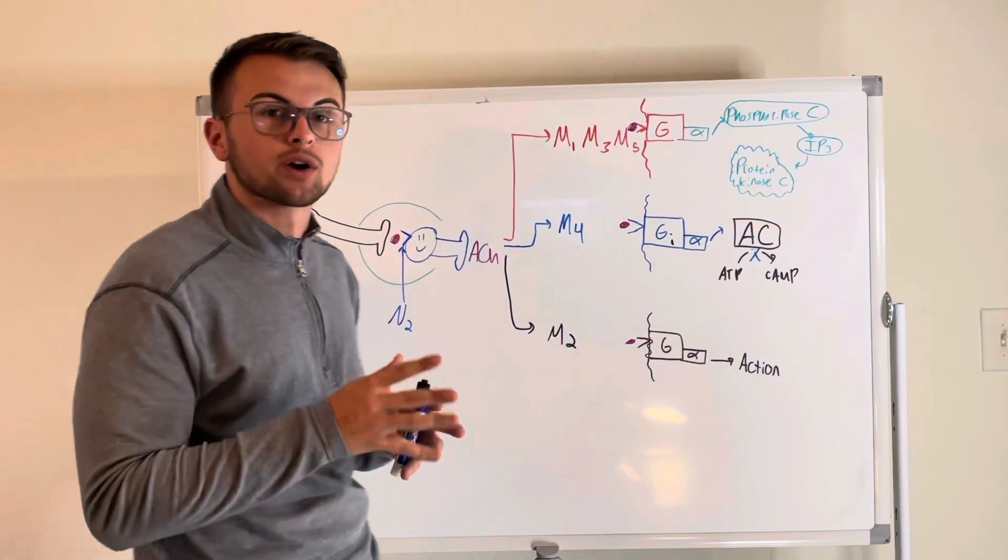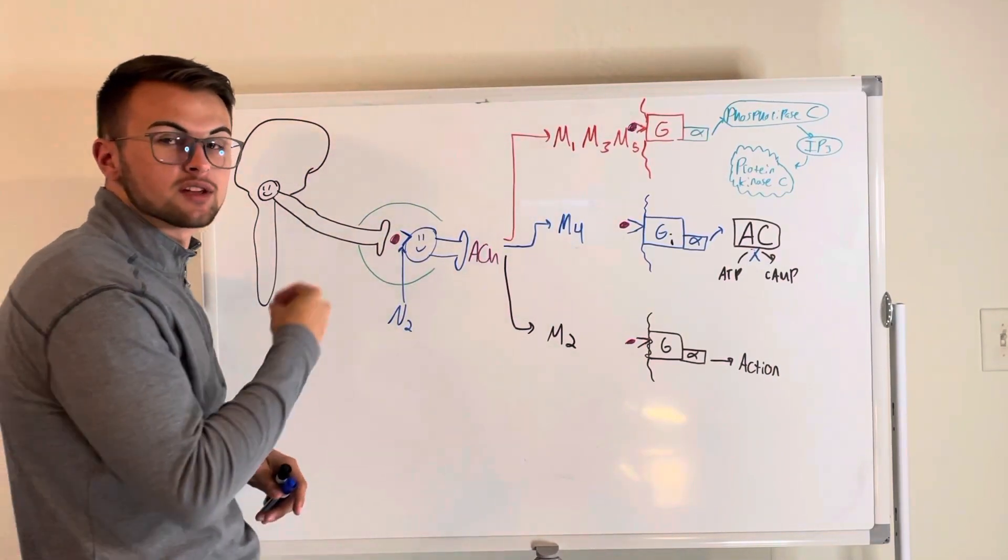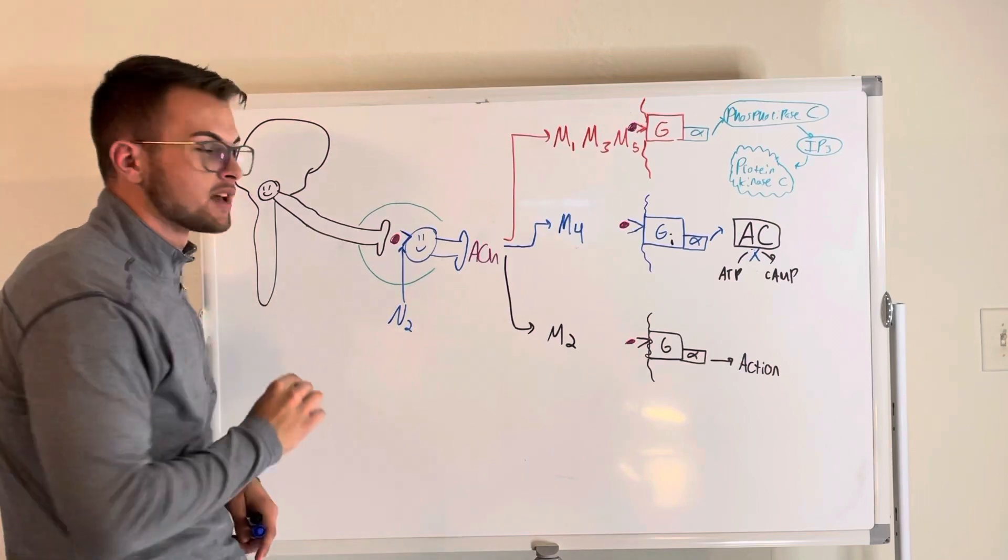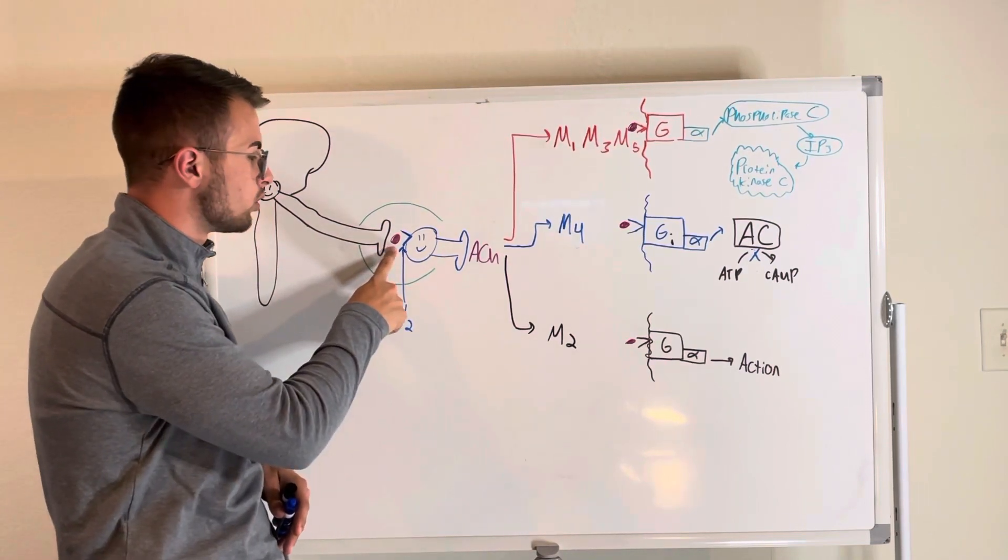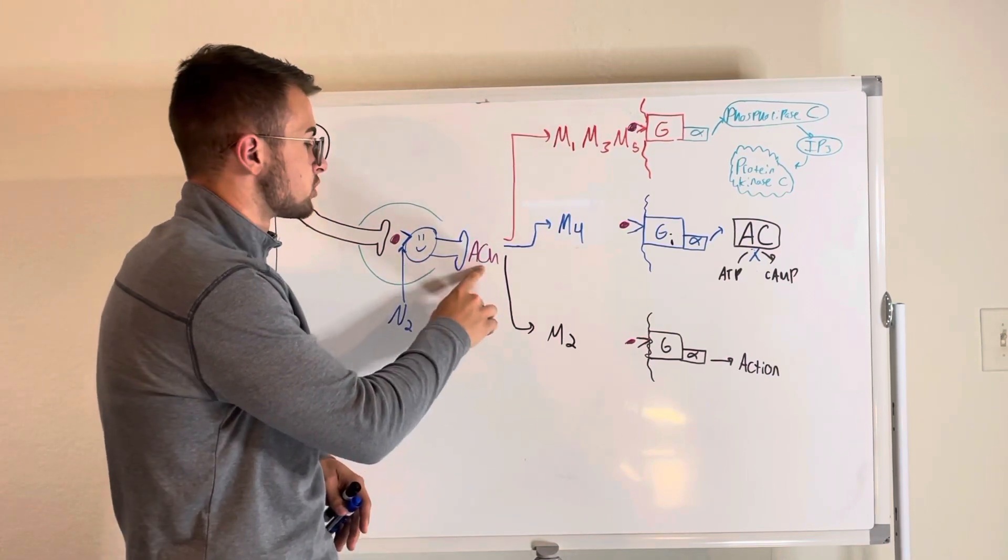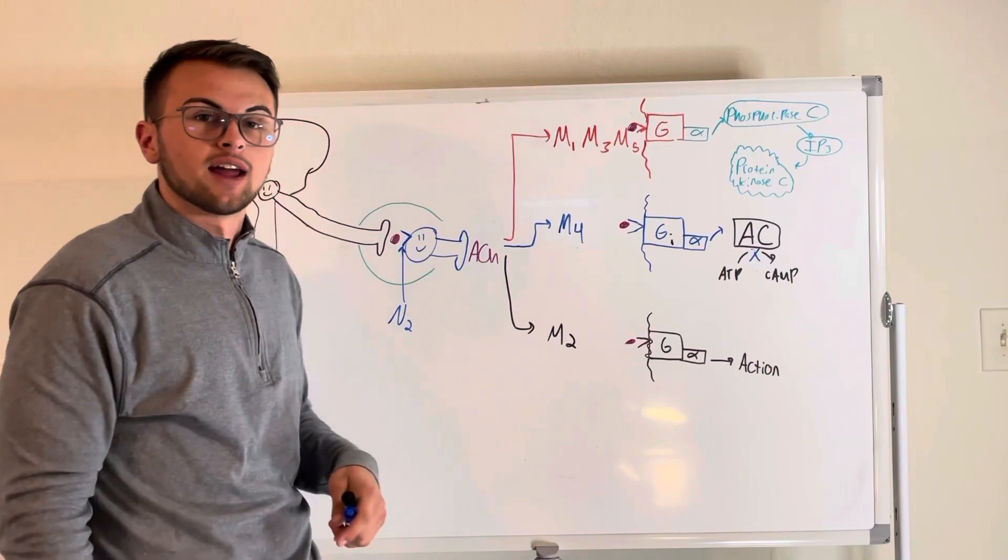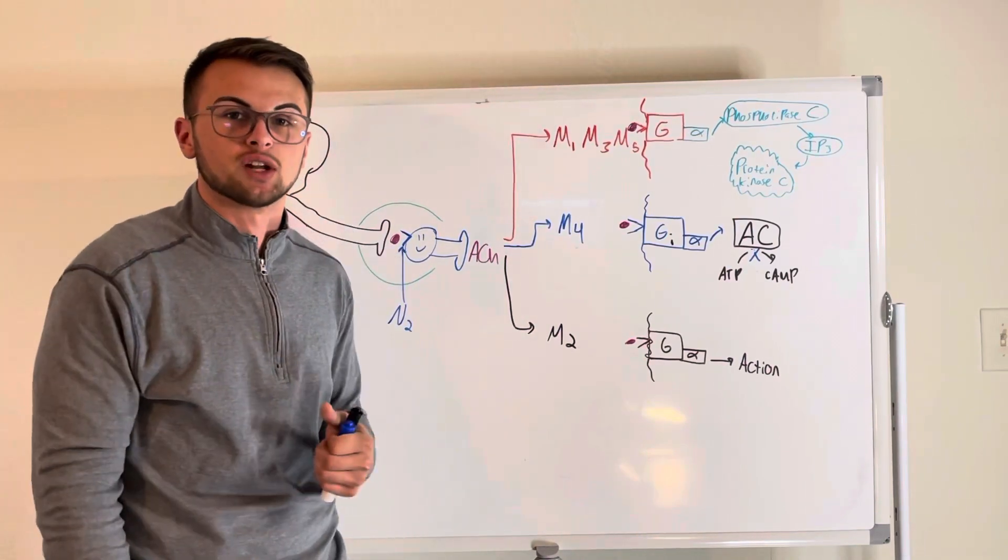So first off, just a quick recap. We have our parasympathetic nervous system here. We know that it uses the cranial nerves and also S2 to S4, and we know that the pre-ganglionic neurons release acetylcholine which binds to N2 receptors, which causes the post-ganglionic receptors to also release acetylcholine. Now what we're going to differentiate between today are the types of nicotinic and muscarinic receptors.